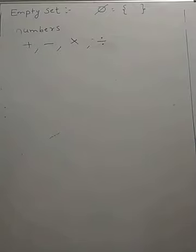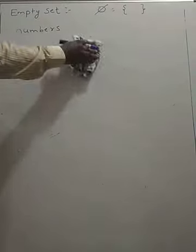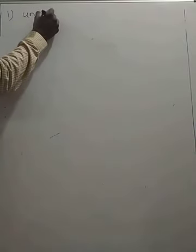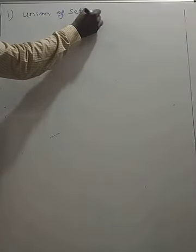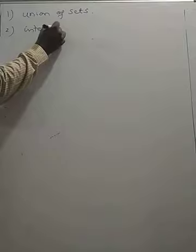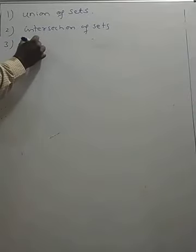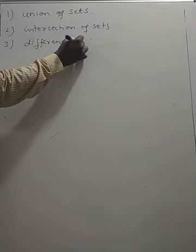After defining sets, we defined three basic operations on sets. Number one is union of sets. Number two is intersection of sets. Number three is difference of sets.